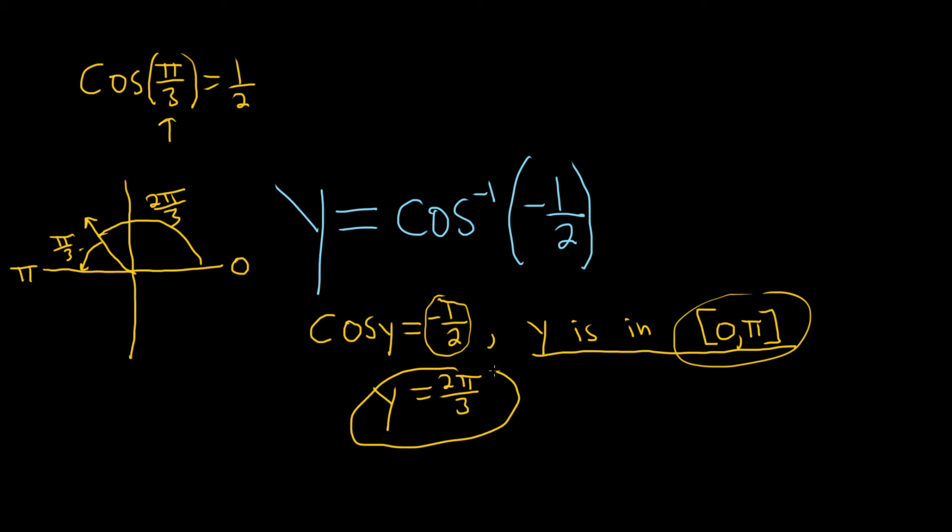Let me just do a really quick recap of everything we just did because it was a lot. People have a really hard time with these problems. So y is equal to the cosine inverse of negative 1 half. The first step is to rewrite it using just the regular cosine. How?